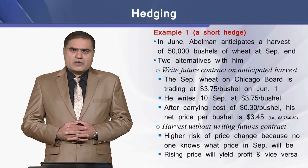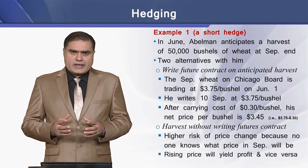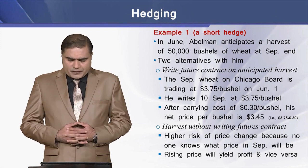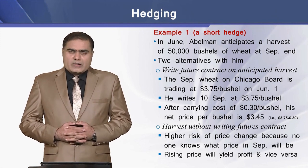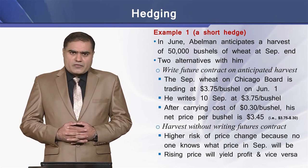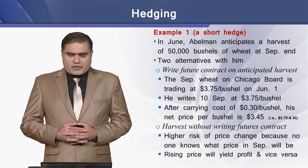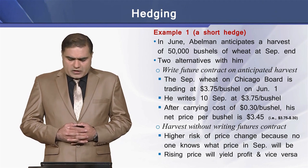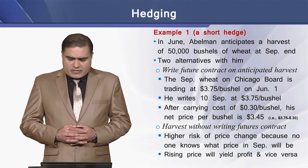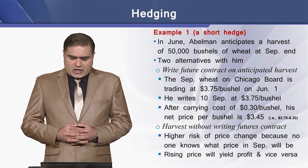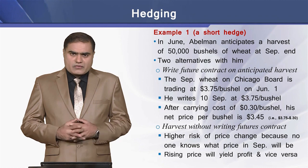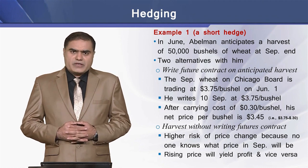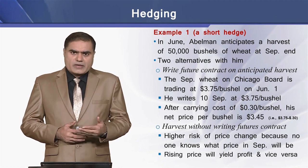To understand the mechanics of a short hedge, let's take an example. The example is of a farmer of wheat, whose name is Abelman. In June, Abelman anticipates a harvest of 50,000 bushels of wheat at September end.